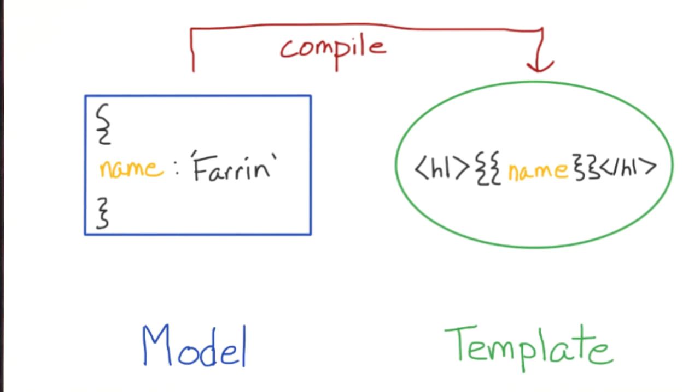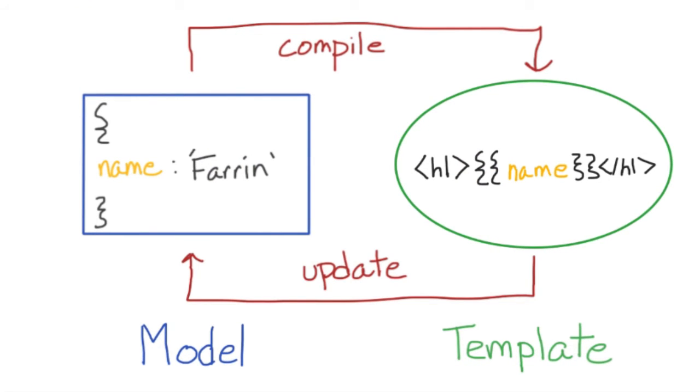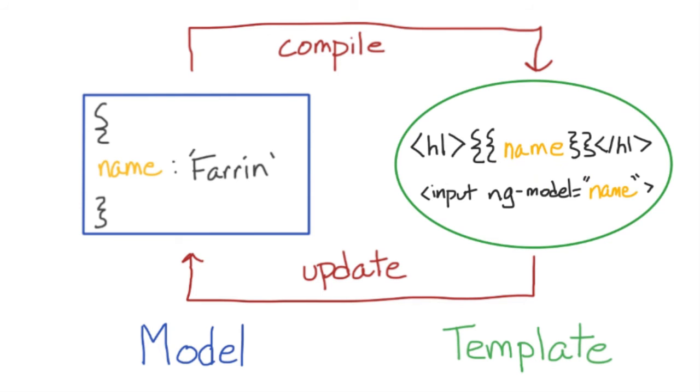A typical framework retrieves the data and displays it in the template. It's a one-way singular fetch of information. Angular retrieves its data in a similar way, but with two-way data binding, the information you add, delete, or change in the browser updates the underlying data object.